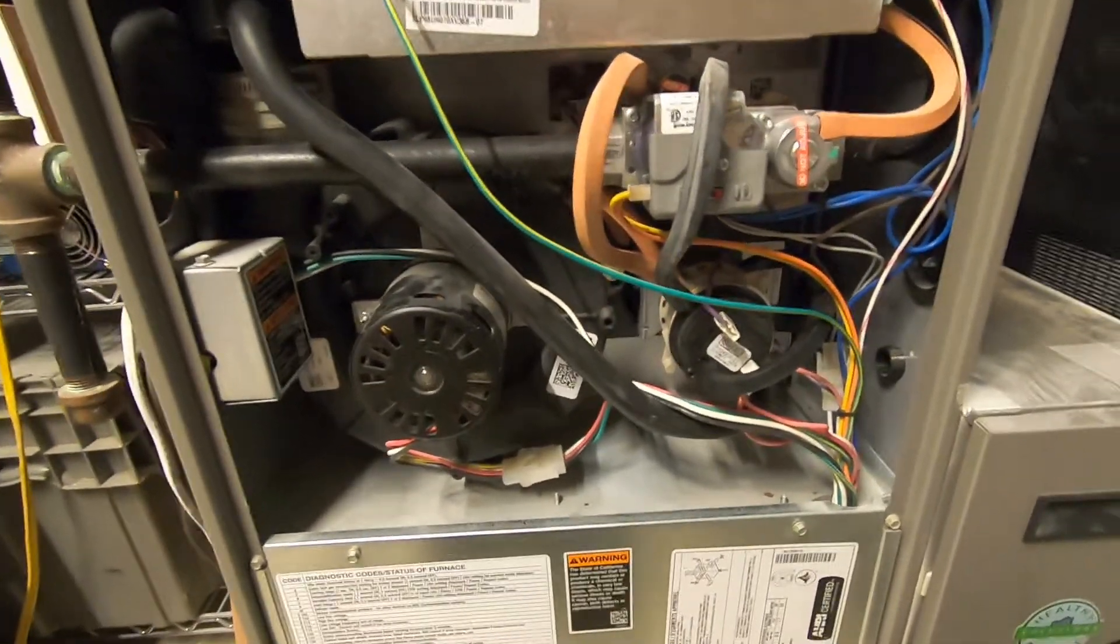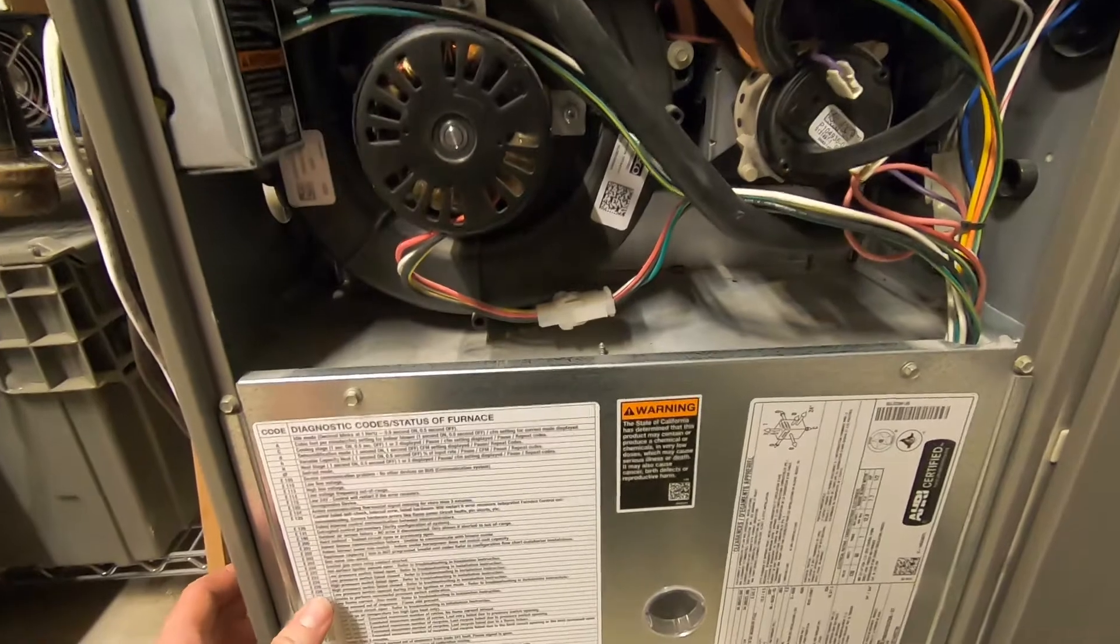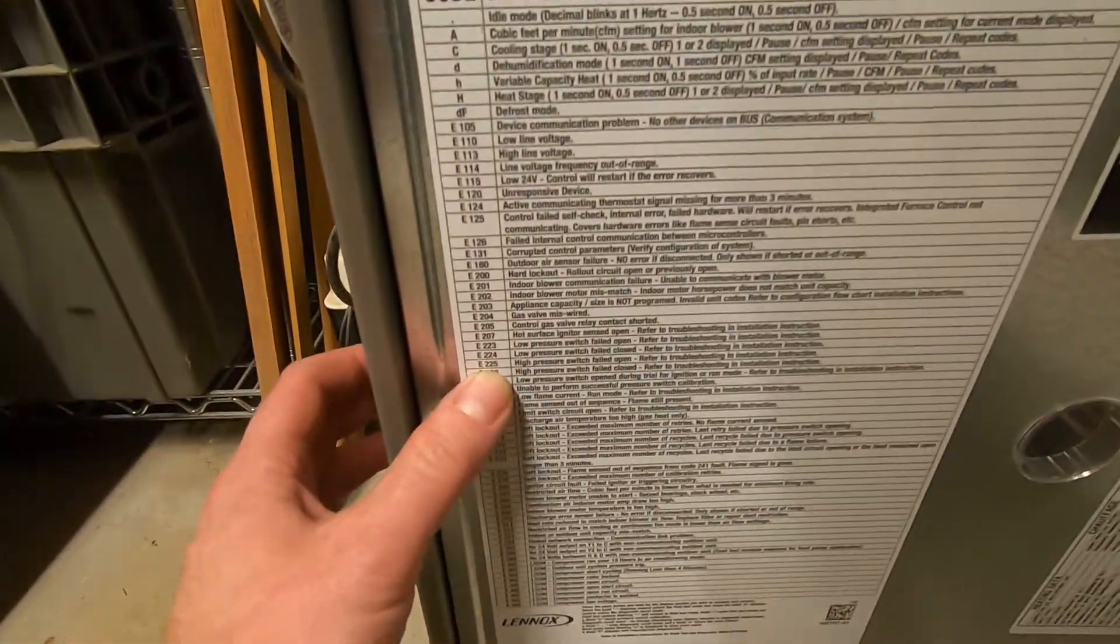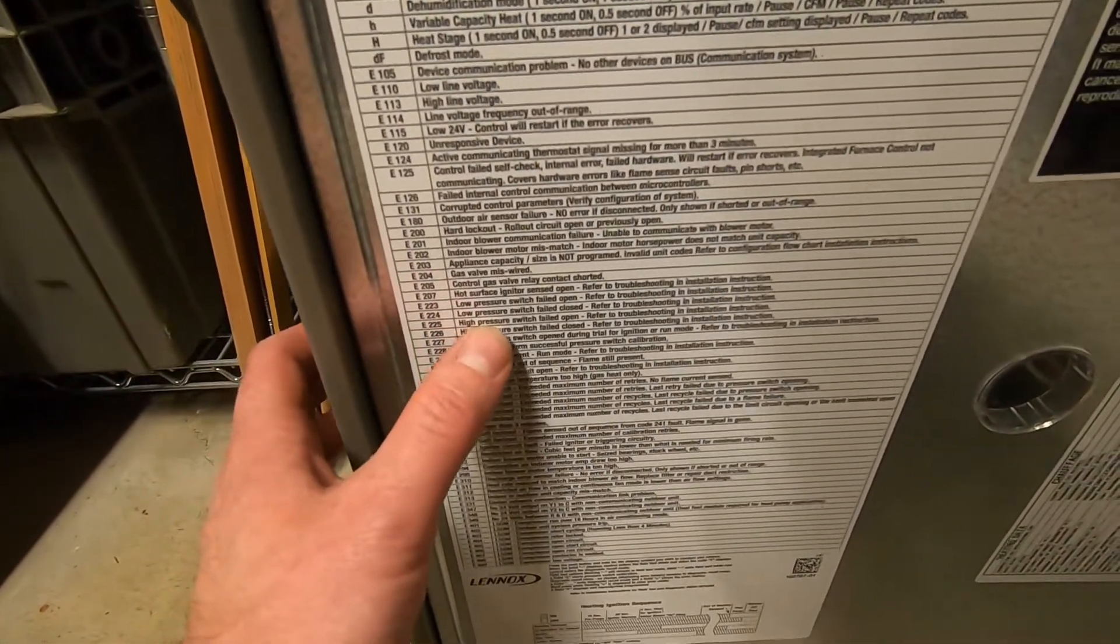All right, today we're fixing my Lennox furnace. We had a code E225, high pressure switch failed open.